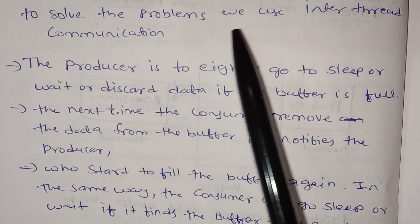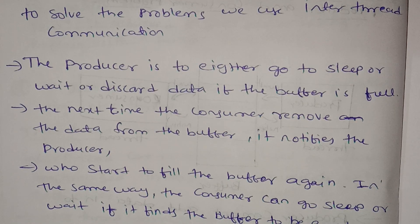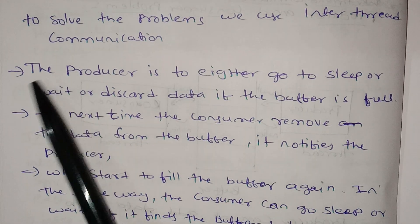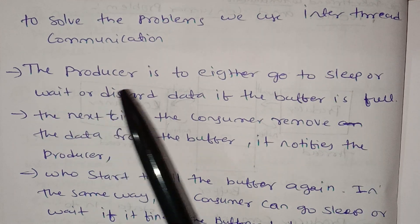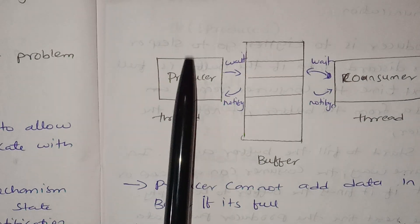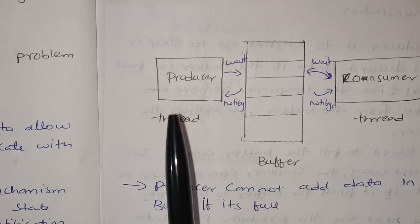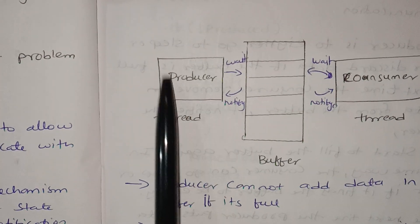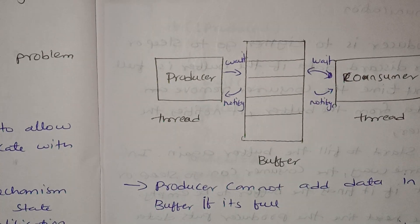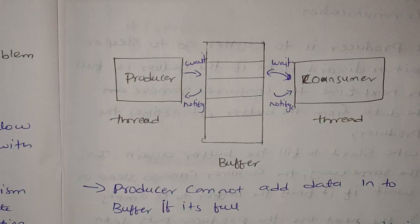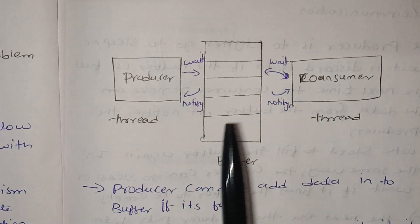To solve this problem we use inter-thread communication. The producer is to either go to sleep or wait, or discard the data if the buffer is full. The next time the consumer removes data from the buffer, it notifies the producer.